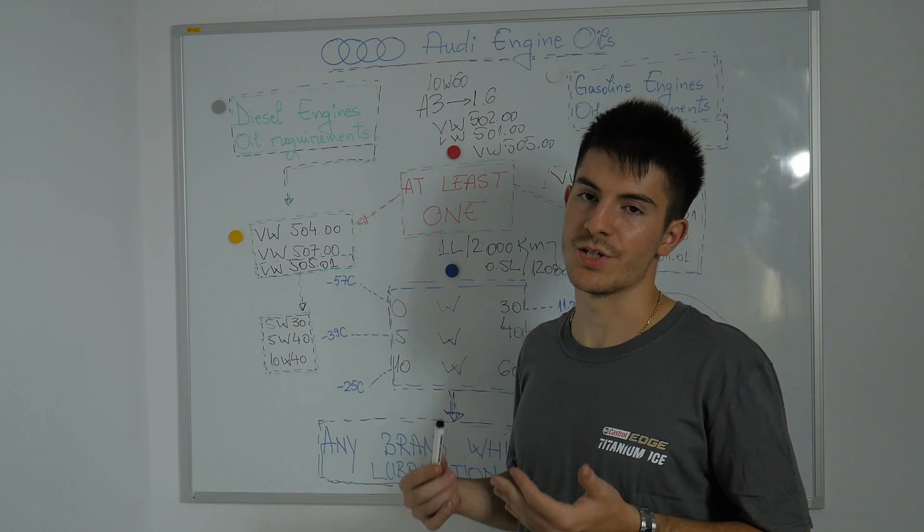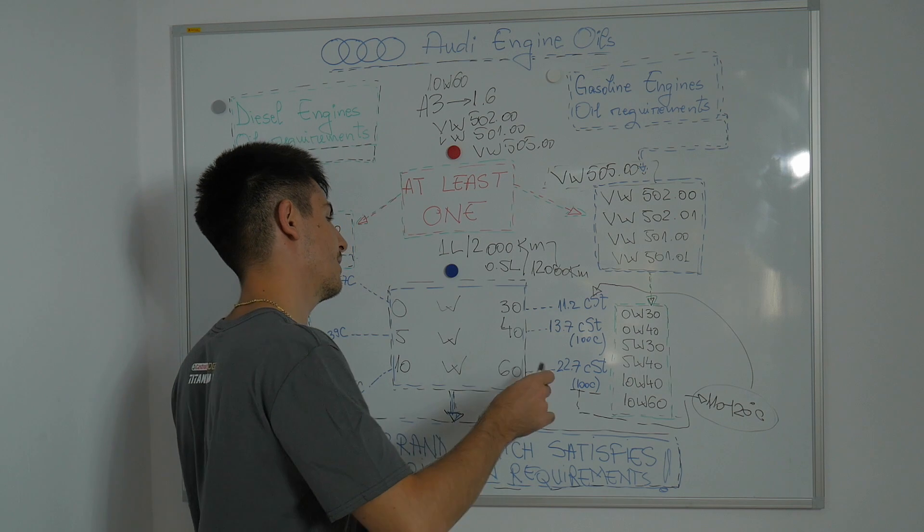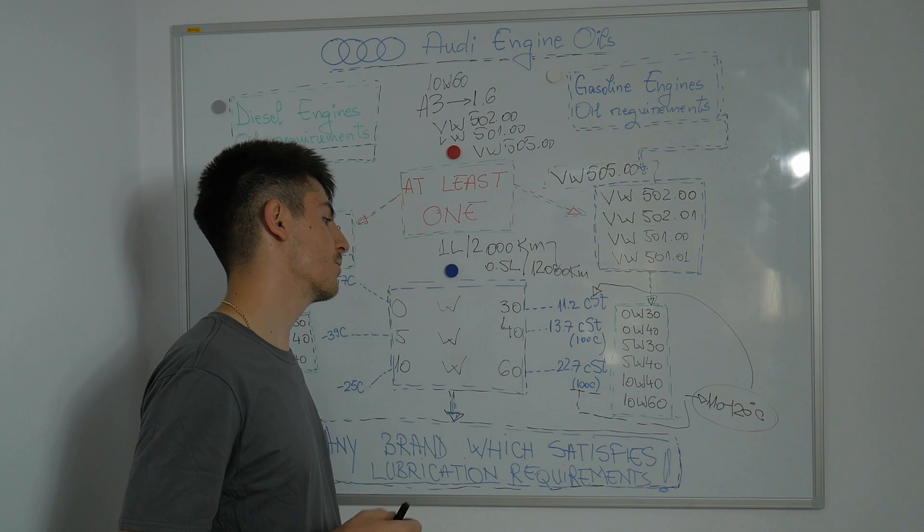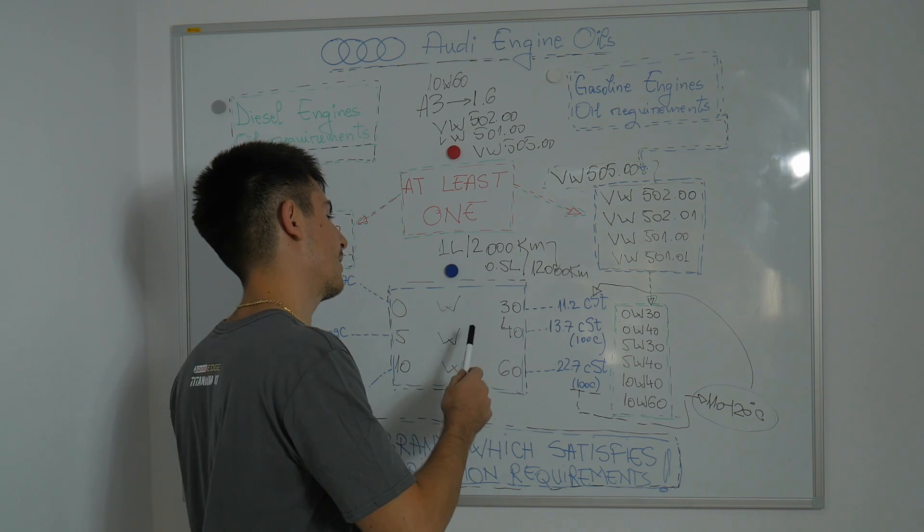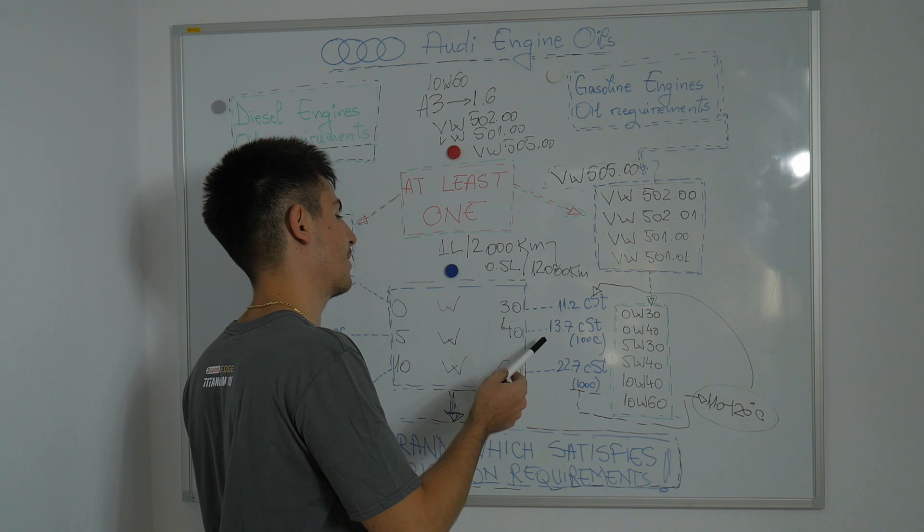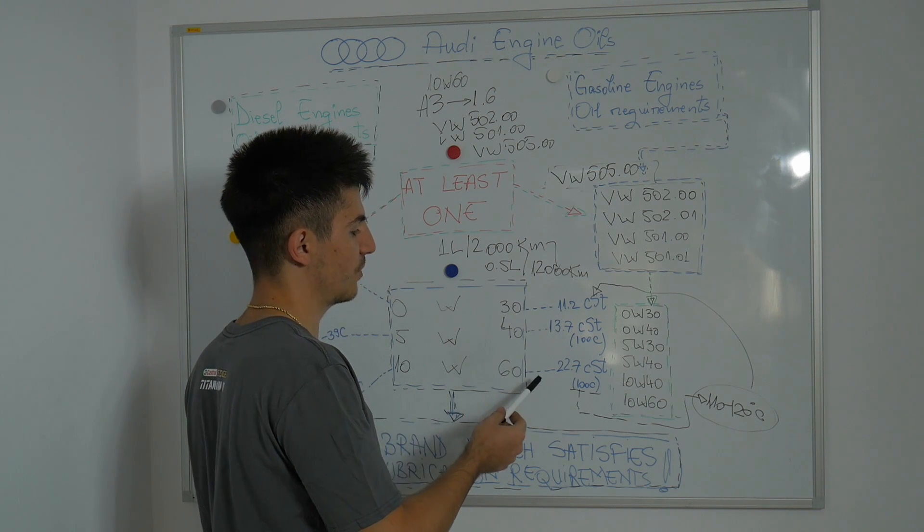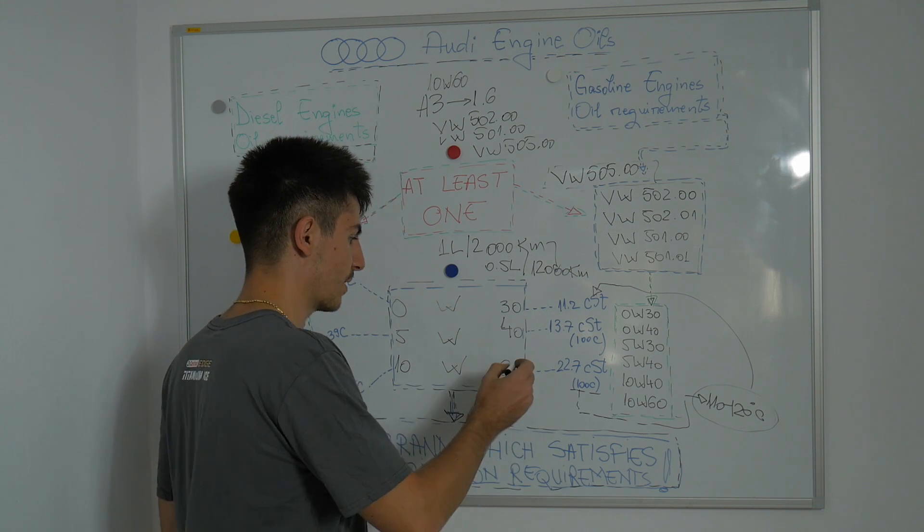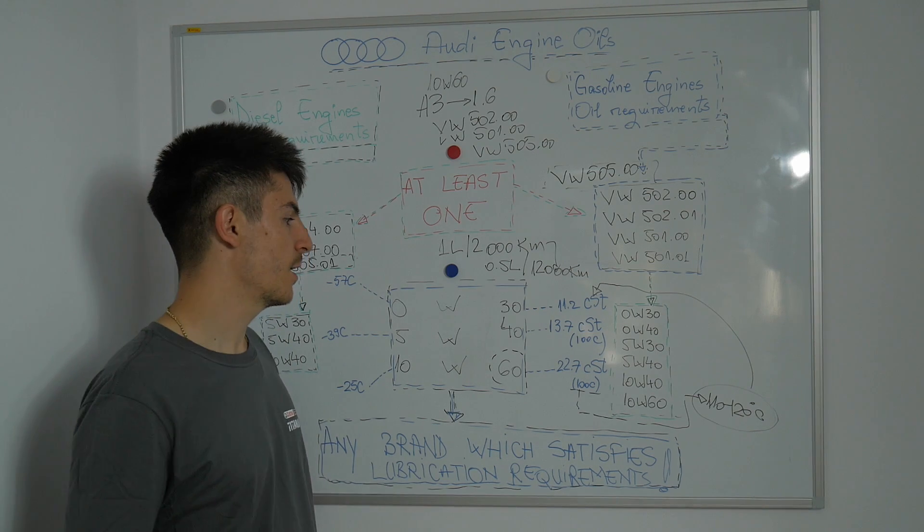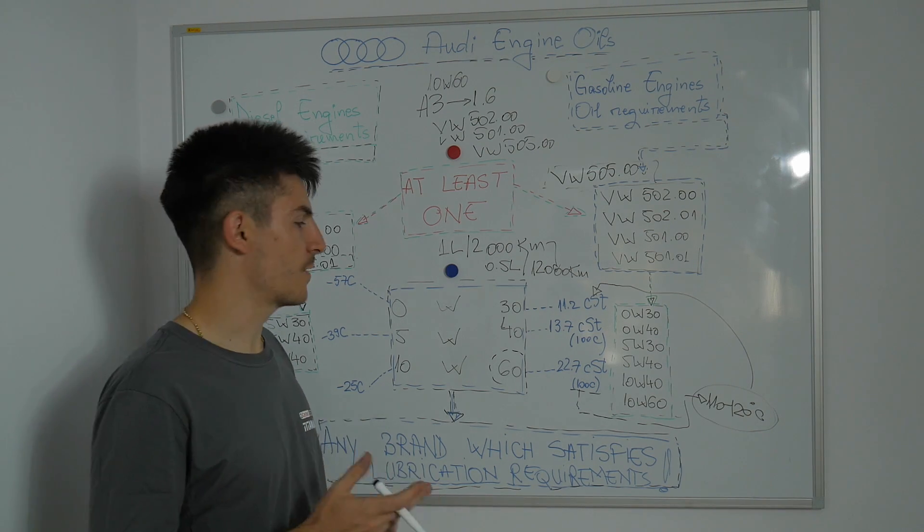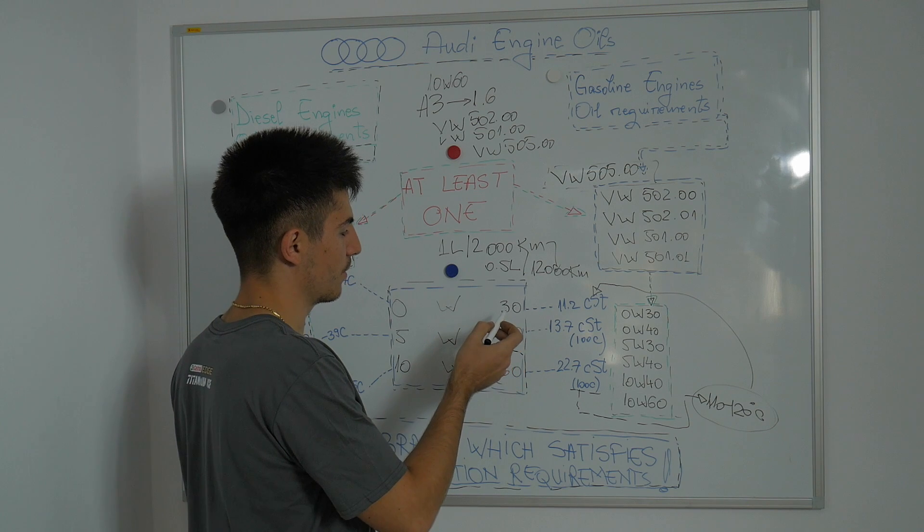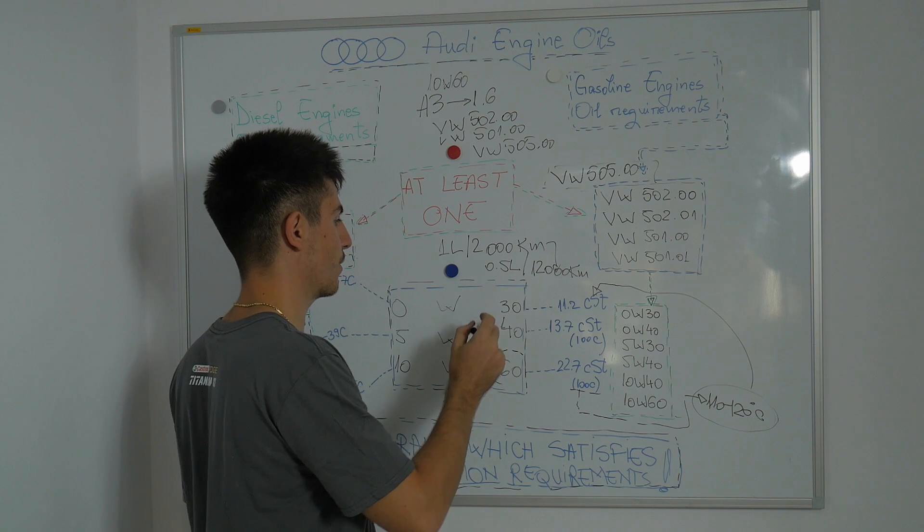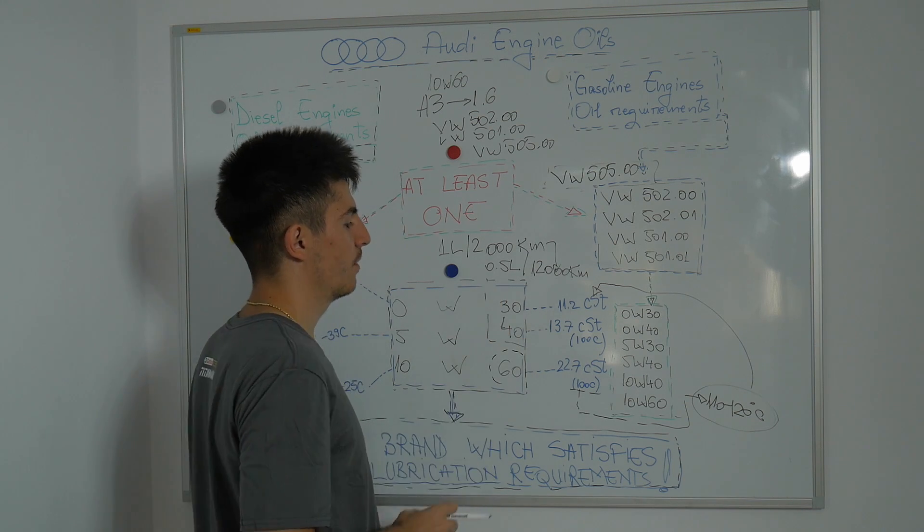As I was saying, these are the values in centistokes of the oil at 100 degrees Celsius. 30 is 11.2, 40 is 13.7, 60 is 22.7. That's why in diesel engines this little guy isn't used - it's too viscous. That's why most diesel engines are using 5W-30 or 5W-40 or 0W-40.